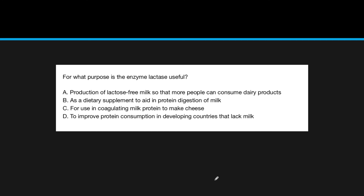Here's an example of a question you might find on the test: for what purpose is the enzyme lactase useful? Immediately when you see lactase, think lactose — lactase will break lactose into glucose and galactose. The answer is production of lactose-free milk, because it breaks down the lactose so that more people can actually consume dairy products. A dietary supplement to aid protein digestion — that's not what we're looking for. For coagulating milk and making cheese — that's a different industry. Improving protein consumption in developing countries — we're talking about what to do with milk we already have.